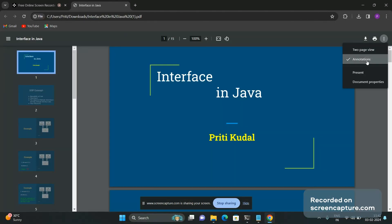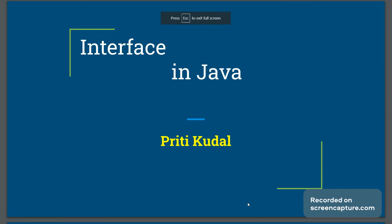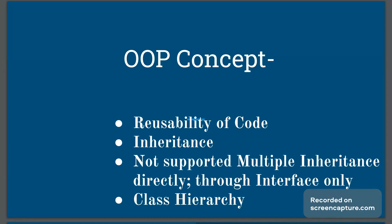Hello, welcome all. Today we will see about a very important concept in Java: interface. In object-oriented programming, the important concept is reusability of code, which helps in dividing the project into modular programming. This saves development time, testing time, and design time, and reduces code complexity. This reusability feature is implemented with the help of inheritance. In Java, multiple inheritance is not directly supported — it is supported with the help of interface only.